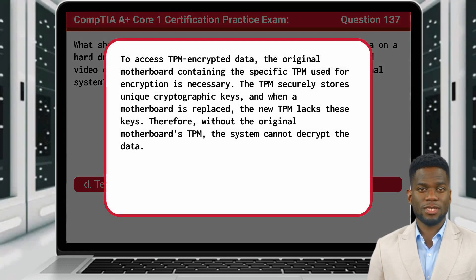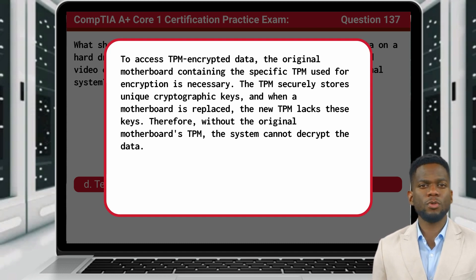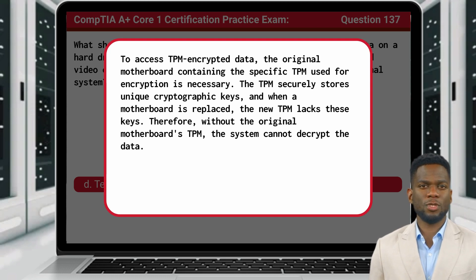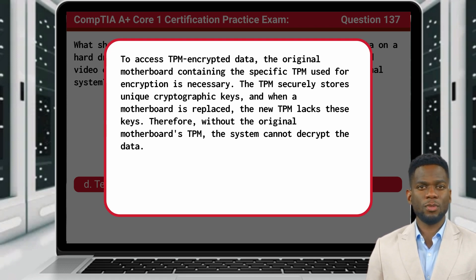To access TPM-encrypted data, the original motherboard containing the specific TPM used for encryption is necessary. The TPM securely stores unique cryptographic keys, and when a motherboard is replaced, the new TPM lacks these keys. Therefore, without the original motherboard's TPM, the system cannot decrypt the data.